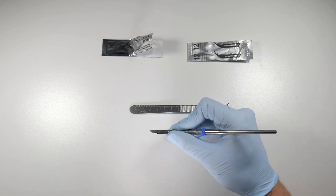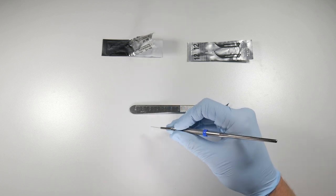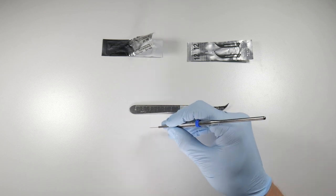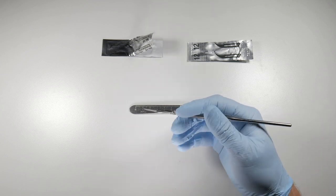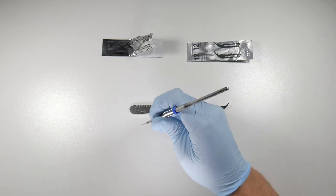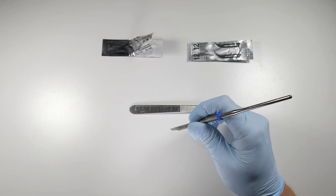As you're pulling the scalpel along, you want to press very, very firmly. If you don't, what's going to happen is you're going to cut and you're going to end up with a partial thickness flap because you're not going to get through that periosteum all the way to the bone.